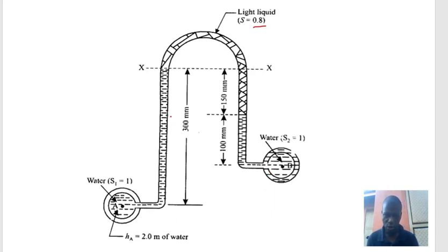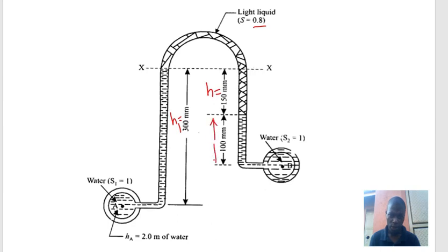Let us define the variables. The height from pipe A up to the manometer fluid level is h1. The height of the oil in the manometer is H, and the height from the manometer fluid down to the center of pipe B is h2.